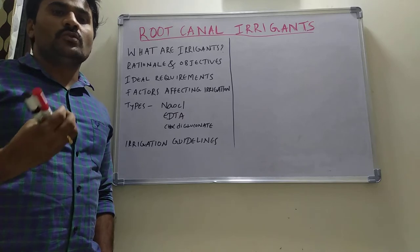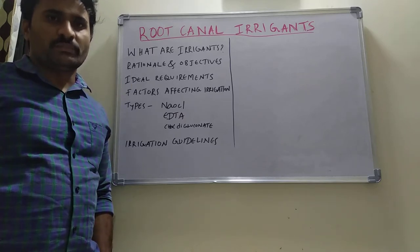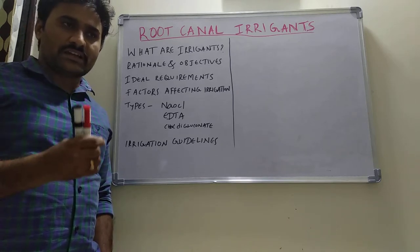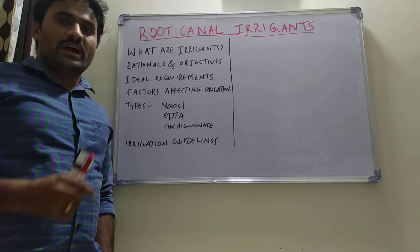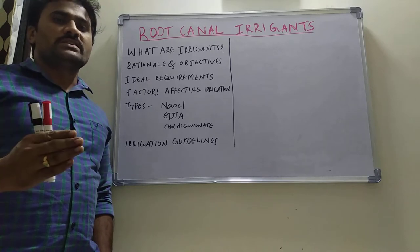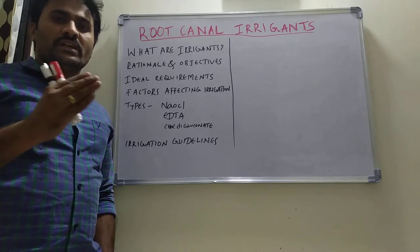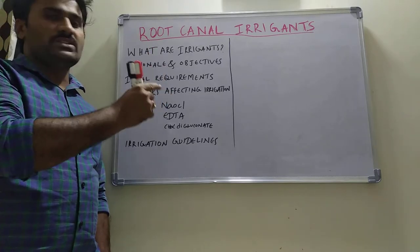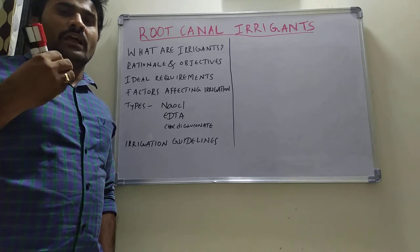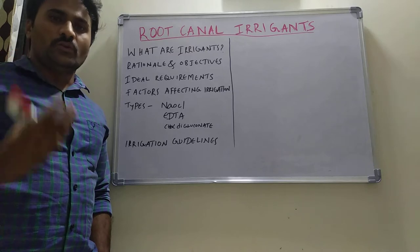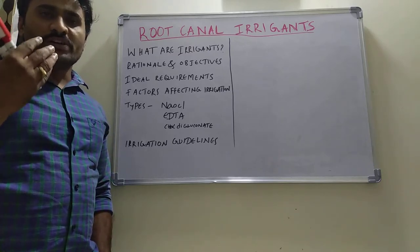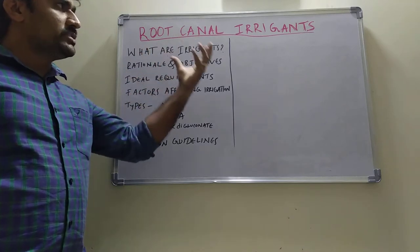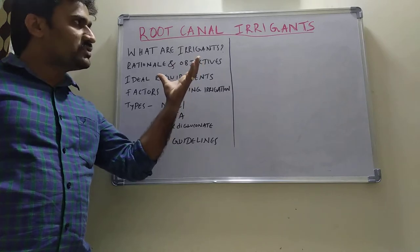The filing procedure during biomechanical preparation eliminates microbial load but not completely. In some narrow isthmi, lateral canals, and C-shaped canals, filing will not remove microorganisms completely. In those cases, irrigation is very important. Irrigants essentially provide cleaning and eliminate the microbial load, while filing provides a proper funnel shape to the canal to receive the gutta-percha core.